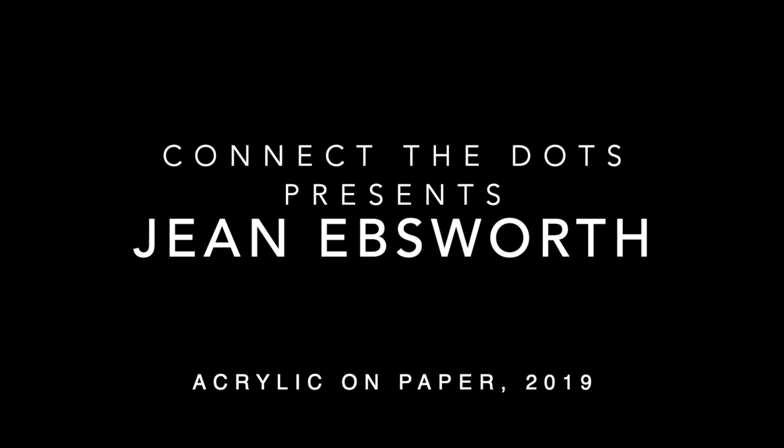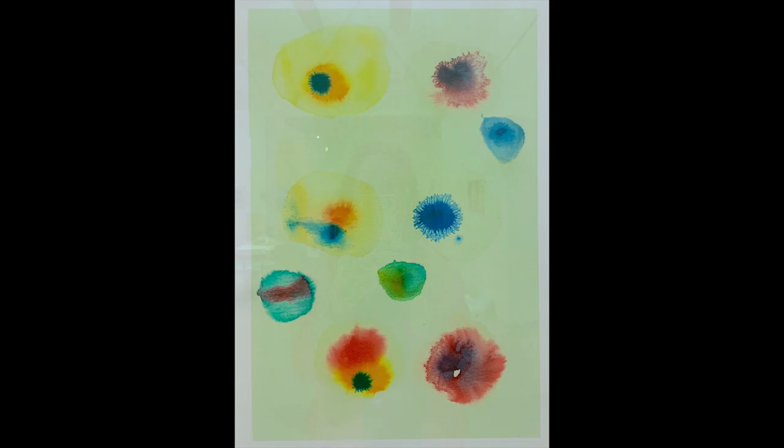Gene Ebsworth, untitled acrylic on paper, 2019. 29 centimeters wide and 42 centimeters high, floating on a white background in a frame 42.5 centimeters wide and 55 centimeters high. On a pale greeny-yellow background, pale colored splotches and stains